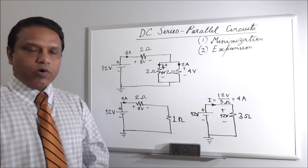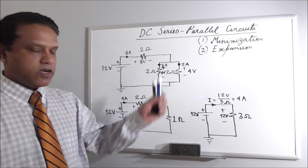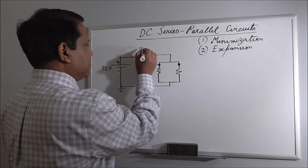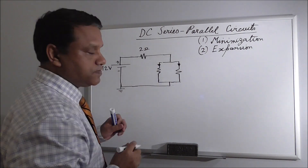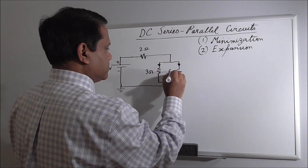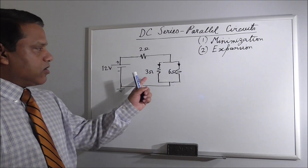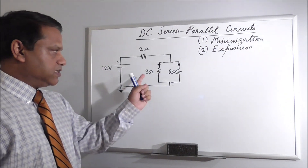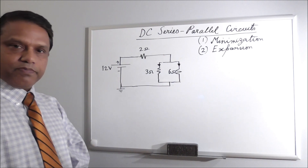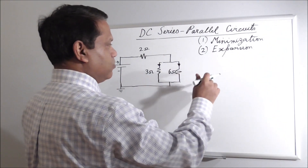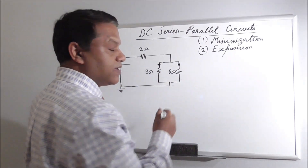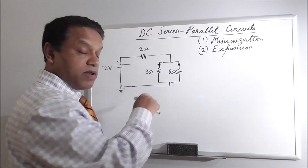First, we will deal with what if these resistors are not equal. Let us re-draw the circuit. This is again 2 ohm. Let us assume this is 3 ohm and this is 6 ohm. What is the combined resistance or equivalent resistance if one resistance is 3 ohm and the other is 6 ohm? From our discussion on parallel circuits, the equivalent value of these two resistors would be their product over sum. Product is 3 times 6, which is 18. And sum is 3 plus 6, which is 9.